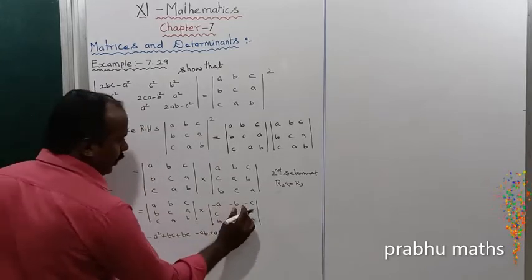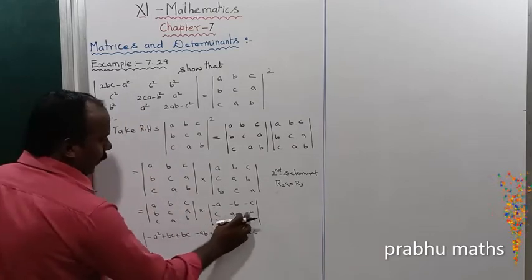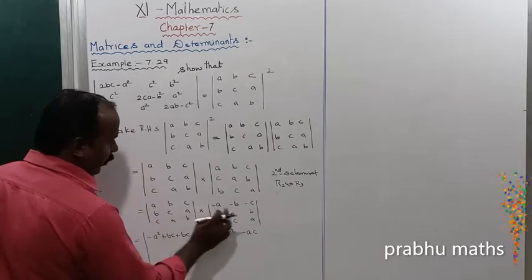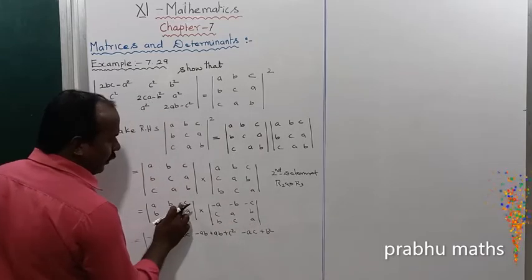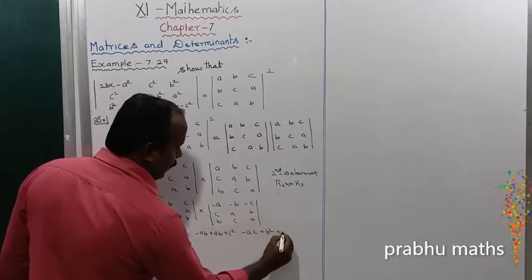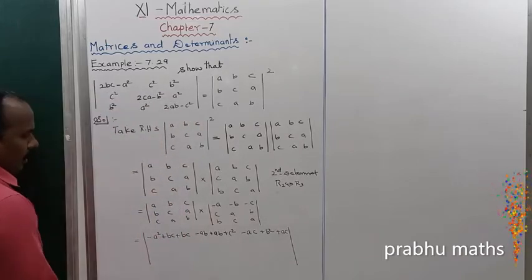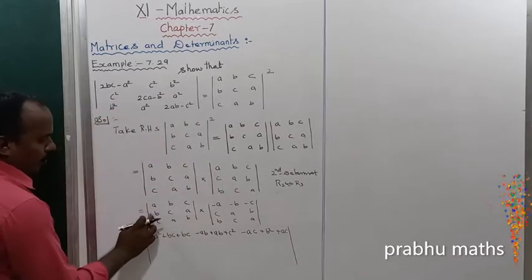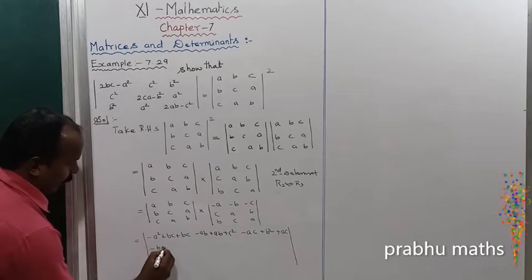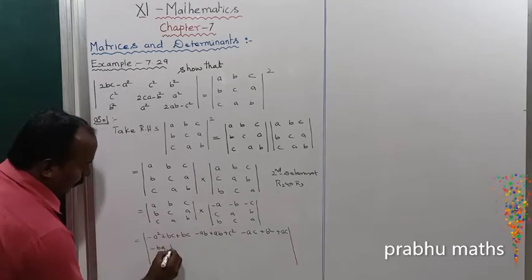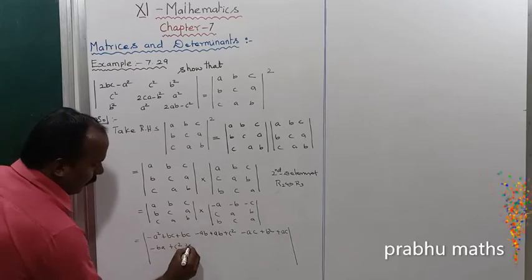Continuing: a into c, minus ac. Then minus b, b into b gives b square, plus ac. For the second row, first column: b into a gives minus ba, c into c gives plus c square, a into b gives plus ab. Second row, second column: b into b gives minus b square.